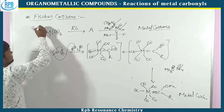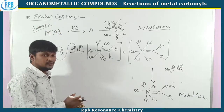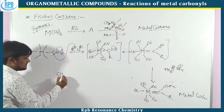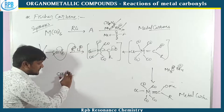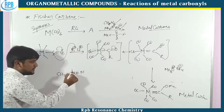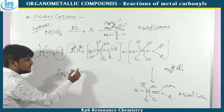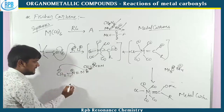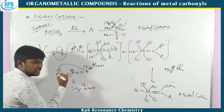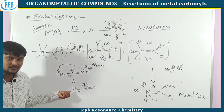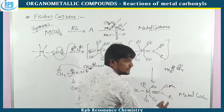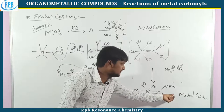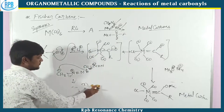Not only trimethyloxonium tetrafluoroborate, but diazomethane (CH2N2) — which is CH2=N⁺=N⁻ — can abstract the proton from another mole of diazomethane and exists as CH3–N≡N⁺. This gives the methyl group, which captures and forms the O-methoxy group. This is the way to synthesize Fischer carbene.